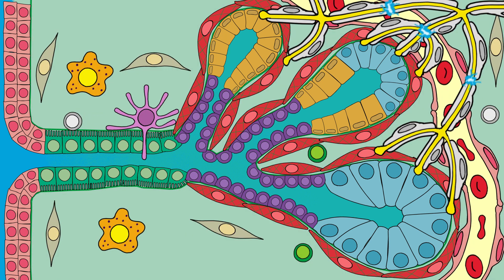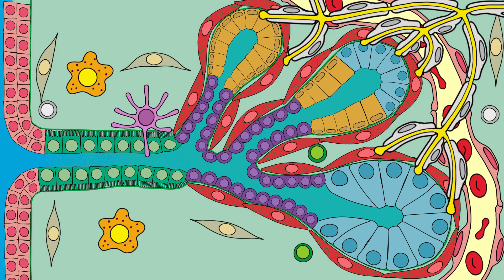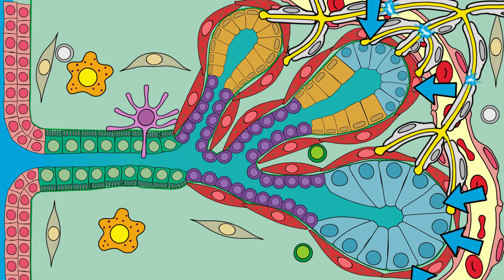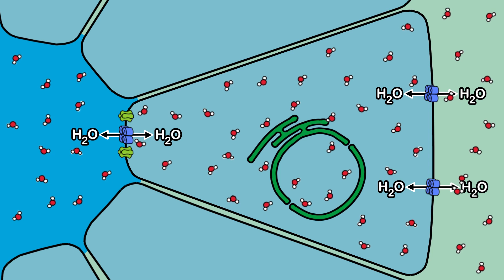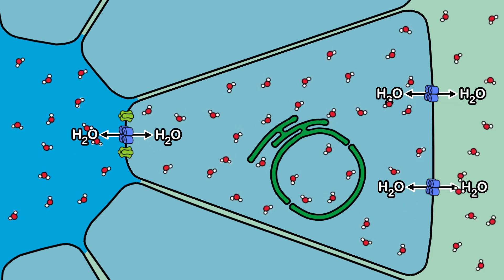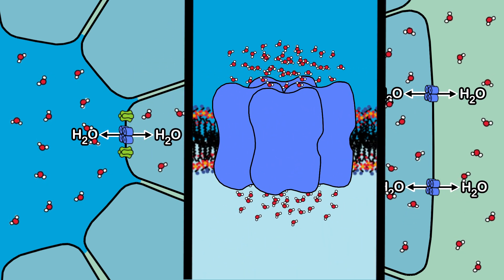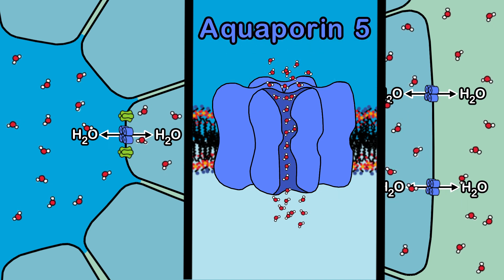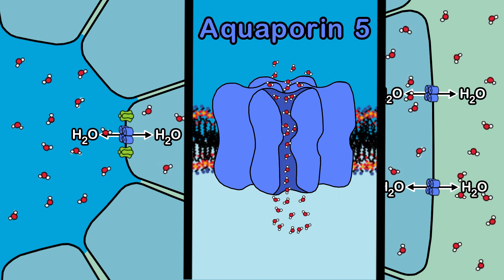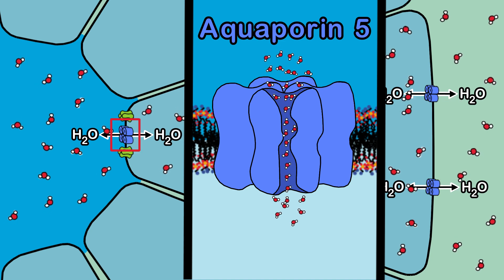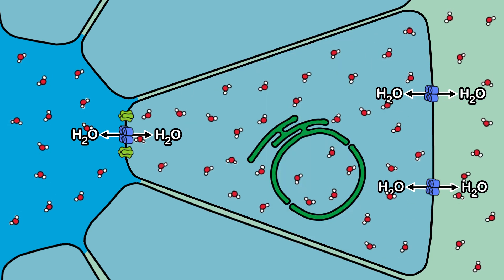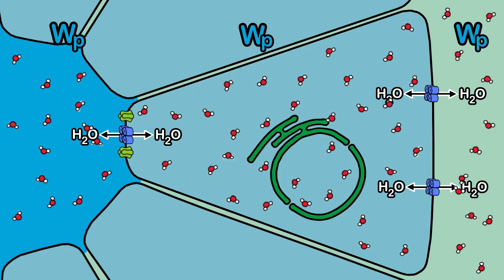To produce saliva, cells utilize a specific mechanism to transport water from the capillaries to the core of the acini. However, controlling the movement of water is not simple, as there is no protein capable of actively pumping water across the cell membrane. Water enters and leaves the cell through specialized proteins called aquaporins, which act as channels facilitating the free passage of water. In order to control the movement of water, cells adjust their water potential by altering the ion concentration both inside and outside the cell.